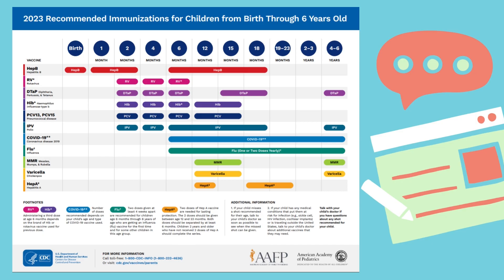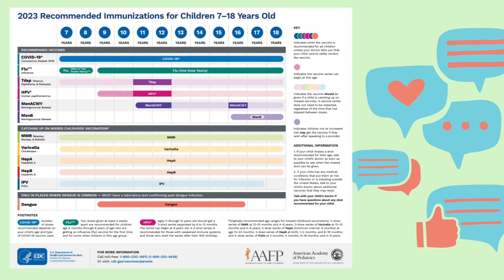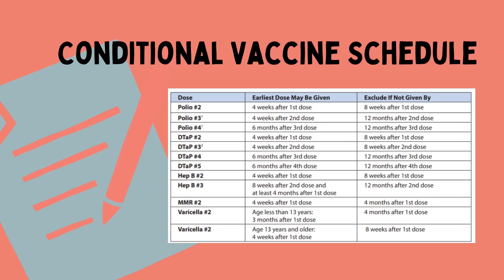These are the recommended immunizations for children from birth through six years old — not all of them are required for school. Here's the same chart for children from ages 7 to 18. The conditional vaccine schedule shows when the earliest dose may be given and when to exclude the child from school if they have not received the dose.